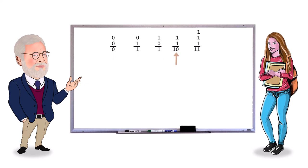If there are two ones, the partial sum is zero and we carry a one into the next place. If there are three ones, which happens when there's a carry in, the partial sum is one and we carry a one into the next place.